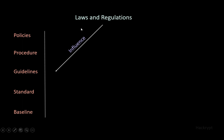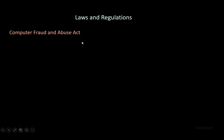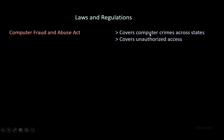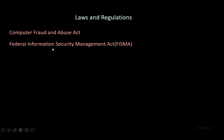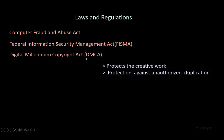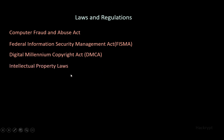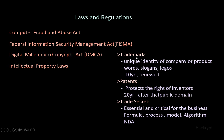Some important laws and regulations include the Computer Fraud and Abuse Act, one of the oldest US-based laws, which covers computer crime across states and makes unauthorized access illegal. The Federal Information Security Management Act requires federal agencies to follow information security management. The Digital Millennium Copyright Act protects the creative works of artists and protects against unauthorized duplication. Intellectual property laws protect properties like trademarks — a unique identity of a company or product in the form of words, slogans, or logos, initially given for 10 years and then renewable. Patents can be made for inventions and are given for 20 years, after which the invention enters the public domain.